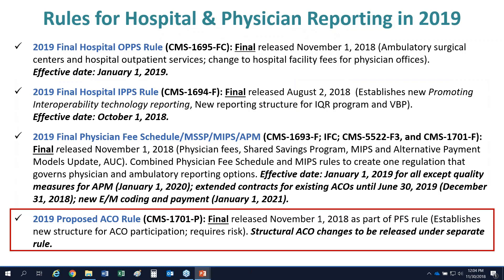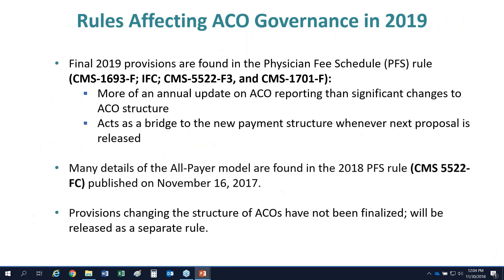All rules are final right now. Note that the ACO rule is considered final for 2019, but only because a lot of its measures were folded into the physician fee schedule rule. However, a lot was left undecided. There will be another rule coming out on ACO structure because the main issue not decided in the proposed rule is the question of how much risk bearing there should be.